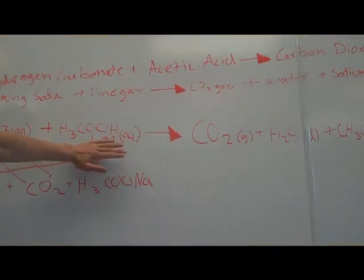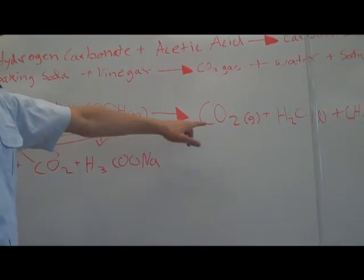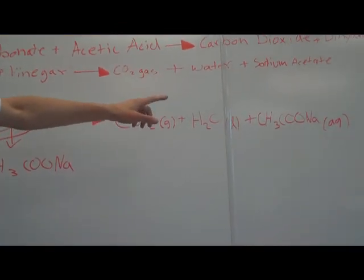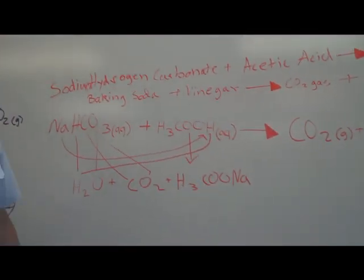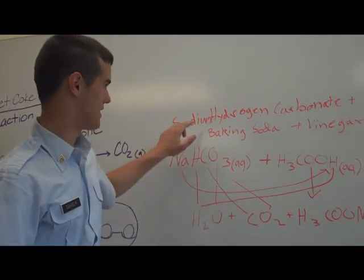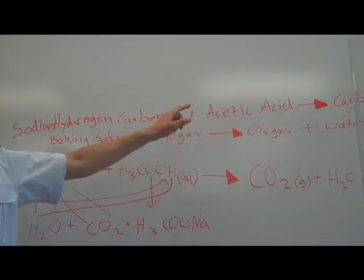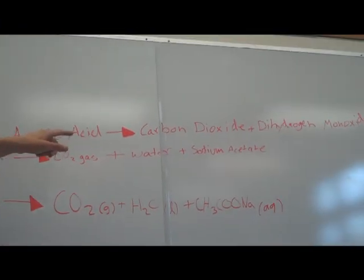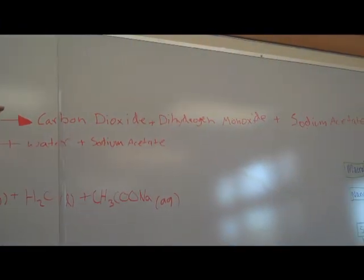NaHCO3 plus H3COO2 gives CO2 and H2O and CH3COO2. Basically, that's sodium hydrogen carbonate plus acetic acid gives carbon dioxide plus dihydrogen oxide plus sodium acetate.